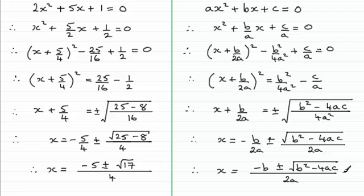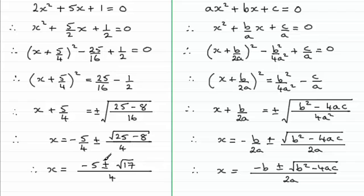You can see that if we take our values a, b and c as 2, 5 and 1 respectively and substitute them into the formula, you get the numerical result we found. So clearly the quadratic formula is going to save us having to go through the full completing the square method each time — we can just take the shortcut. I hope that's given you some idea of how we go about proving the quadratic formula.